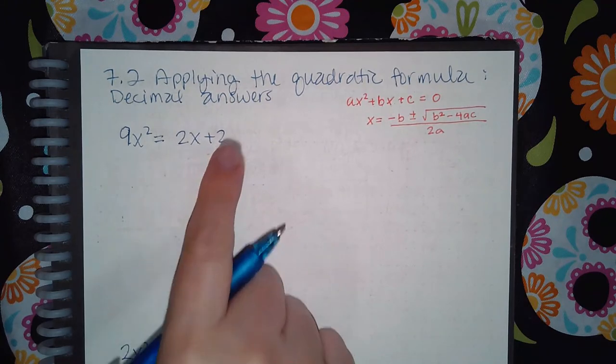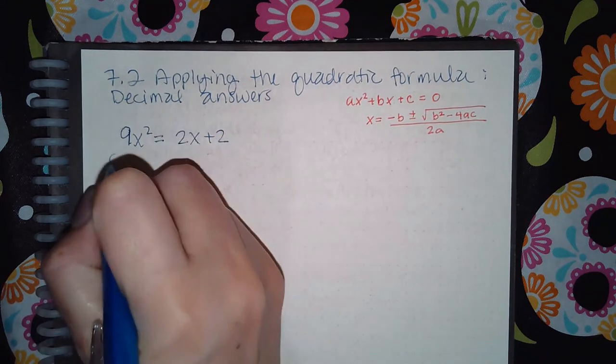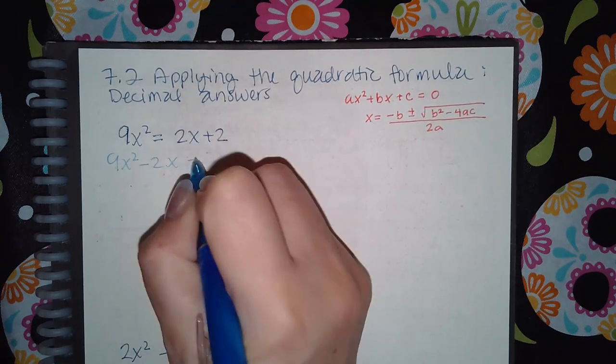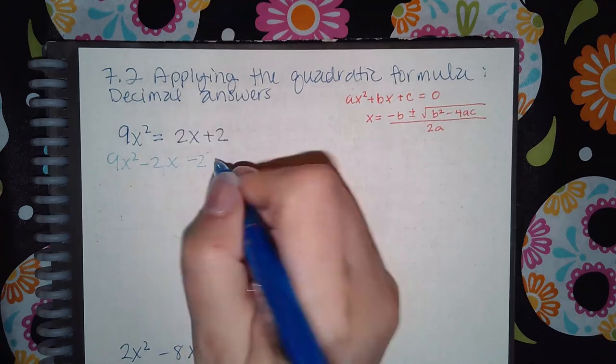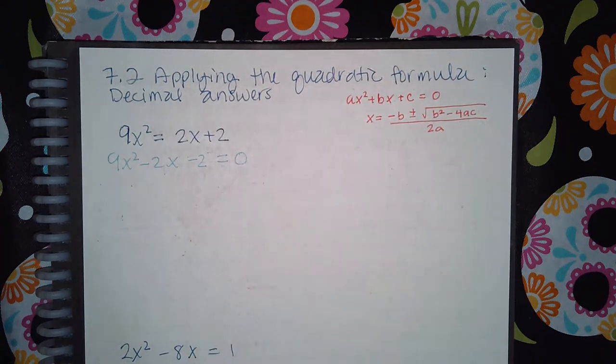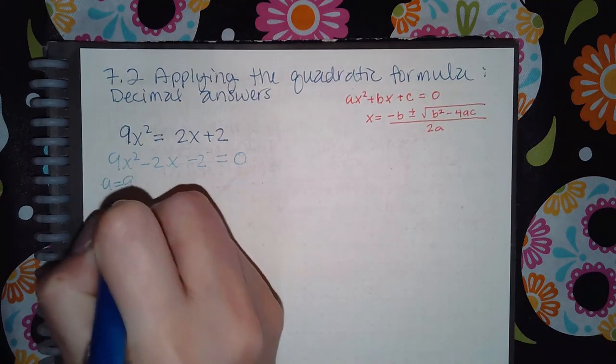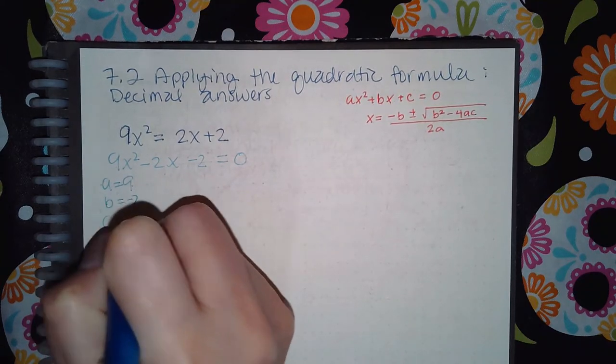When I move them over they change signs, so this becomes 9x² minus 2x minus 2. Since both terms moved over, nothing would be on the right hand side. From here I identify a is positive 9, b is negative 2, and c is negative 2.